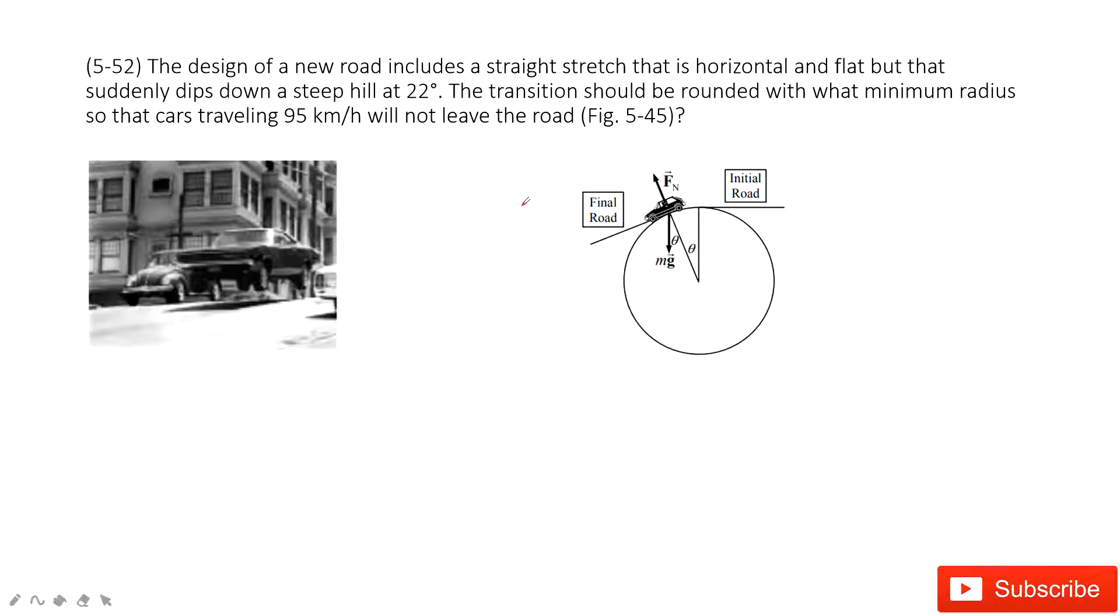In this one, we need to find the minimum radius for this circular motion. And then, in what situation for this minimum radius, it tells you the car will not leave the road.